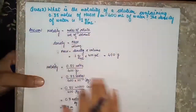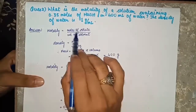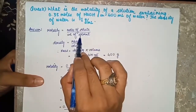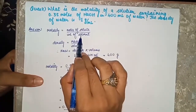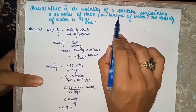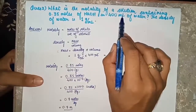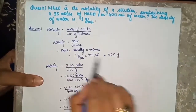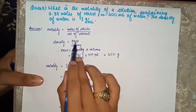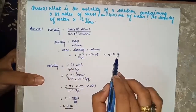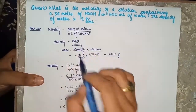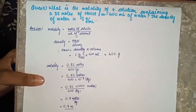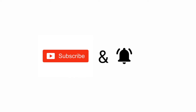This type of question can be solved by first writing the equation — moles of solute upon weight of solvent. Here the volume was given, so first we convert to mass using the density equation. Once we have the mass, we apply it in the equation to get the answer. If you find this video useful, please subscribe and press the bell icon for latest updates. Thank you.